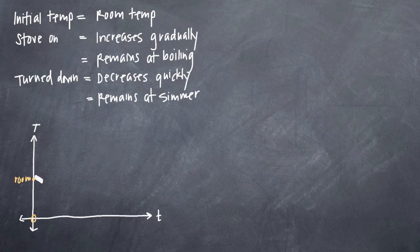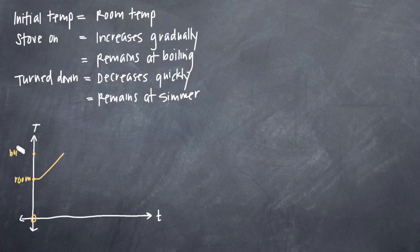Then we've been told that when the stove is turned on, the temperature increases gradually. So we'll say that the stove is turned on almost immediately, and the temperature will increase gradually as a function of time. So maybe this is gradual until it gets to boiling, and maybe we can call this boiling here. So it increases gradually until it gets to a boiling point.